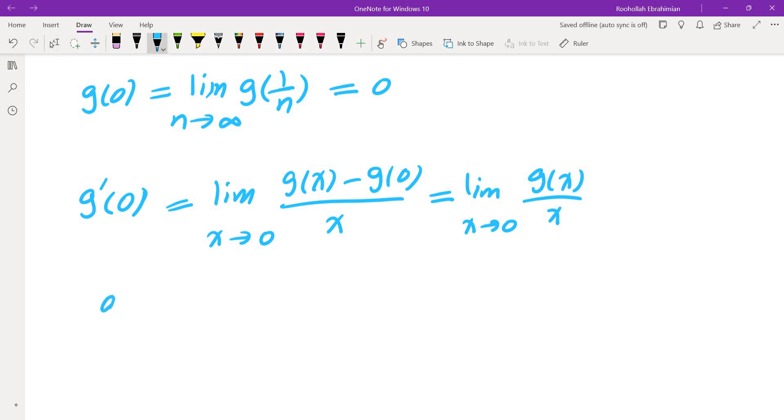However I am given g of 1 over n. g of 1 over n is 0. So that means if I look at g of 1 over n over 1 over n that's 0 and these two tell us that g prime of 0 must be 0.